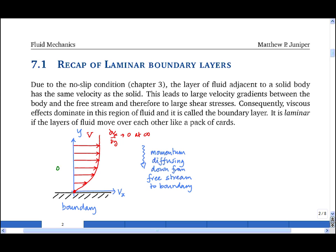The boundary layer thickness, delta, is defined as the thickness over which viscous effects dominate. And because the momentum is diffusing predominantly in one direction, up and down, this is a one-dimensional diffusion problem. And the boundary layer thickness, delta,